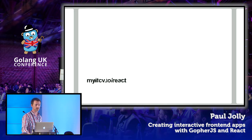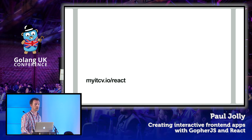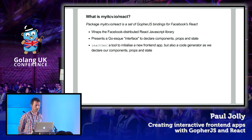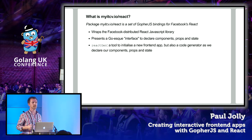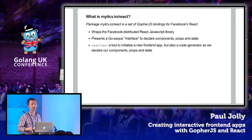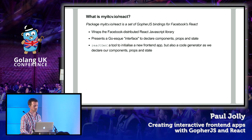How about combining GopherJS and React? This is where the package I've written called myitcv.io/react comes in. It's a set of GopherJS bindings for Facebook's React, wrapping Facebook's JavaScript library. The goal is to present as Go-like as possible an interface to declaring components, props, and state. Along with the package itself is a tool called ReactGen that helps get started quickly by initializing a new project, and also acts as a code generator to help us along the way.